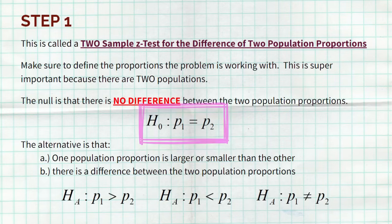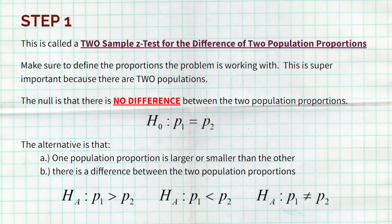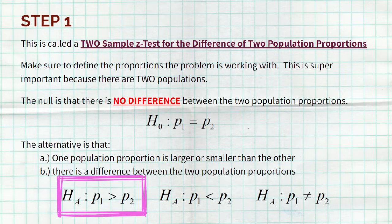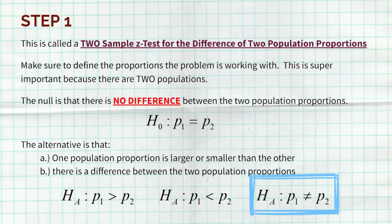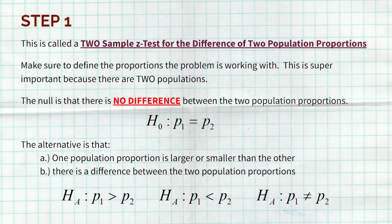In a real problem, identify those two population proportions — like the proportion of boys that do their homework every night versus the proportion of girls. Then write your hypotheses. The null hypothesis is that there is absolutely no difference: P1 equals P2. The alternative is one of three options based on the question — P1 greater than P2, less than P2, or simply not equal to P2.